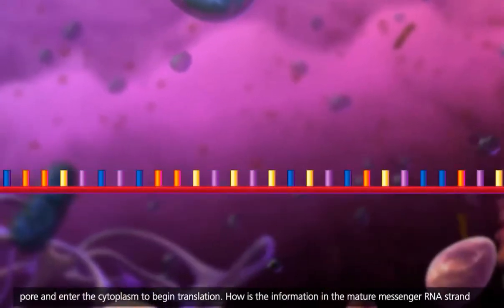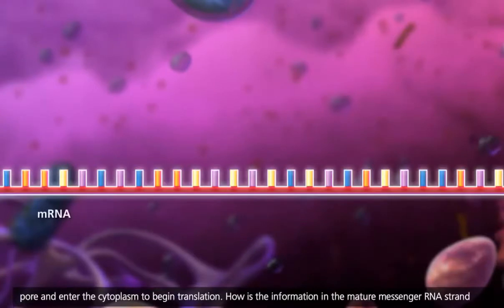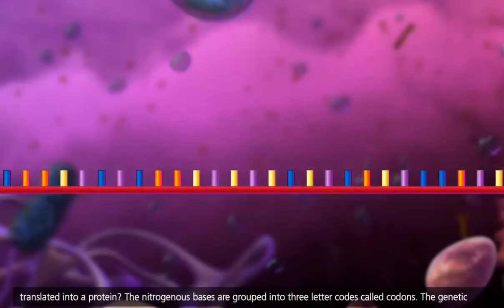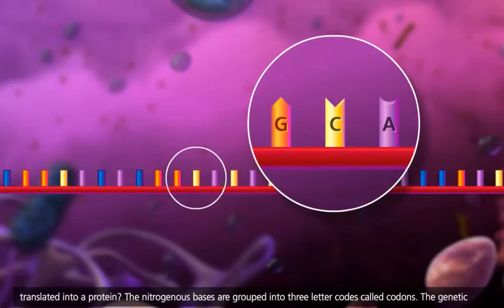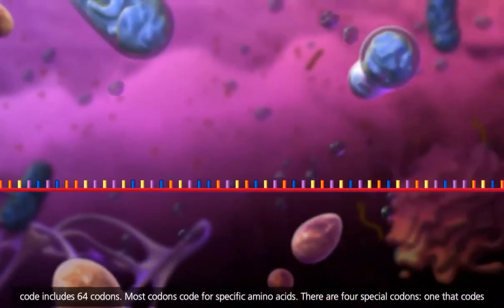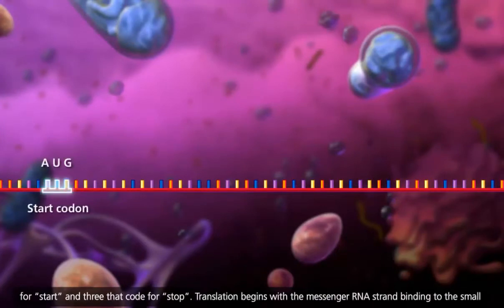How is the information in the mature messenger RNA strand translated into a protein? The nitrogenous bases are grouped into three-letter codes called codons. The genetic code includes 64 codons. Most codons code for specific amino acids. There are four special codons: one that codes for start and three that code for stop.